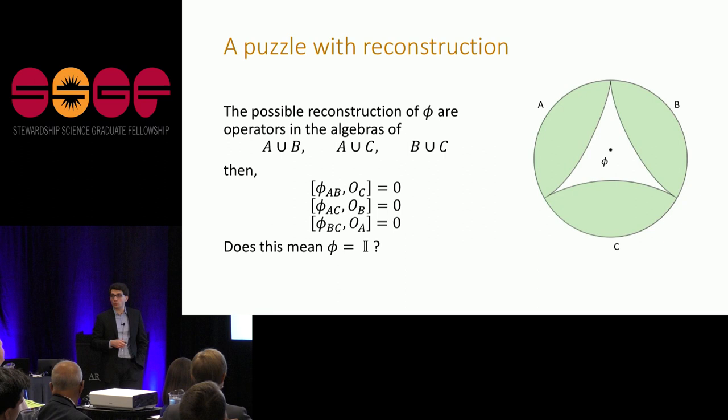Because we know from the first slide that in quantum field theory, if operators are space-like, they commute. So if I rewrite phi, if I reconstruct phi in ab, I'll call phi ab, it will not affect anything in c. And if I rewrite in ac, it will not affect anything in b, and so on. But the only operator that doesn't affect anything anywhere else is a trivial one, is the identity. And obviously, if this is really a particle or something in the AdS space-time, it's not the identity, it's something that is actually real. So there seems to be a puzzle here.